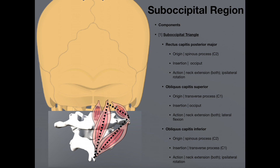With the obliquus capitis superior, its action is: if both left and right muscles contract, we get neck extension, which assists the rectus capitis posterior major and the major neck extensors like the splenius capitis. And if one obliquus capitis superior contracts, we get ipsilateral lateral flexion. So if the right obliquus capitis superior contracts without the left, then we get lateral flexion of the neck to the right.